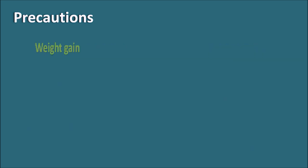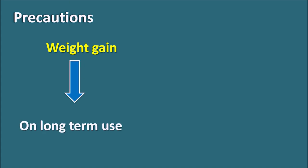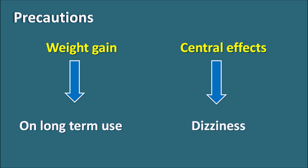Another precaution is weight gain. Since this drug promotes weight gain, particularly with long-term use, weight should be thoroughly monitored. Another precaution is the central side effects — pregabalin can increase dizziness in patients. Therefore, whenever a patient has central disorders like dizziness, or is taking other drugs that produce dizziness and drowsiness, pregabalin should be given carefully. For example, alcohol can produce some drowsiness, which may interact with pregabalin to produce more drowsiness and dizziness.